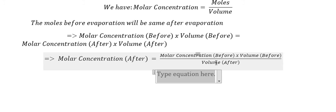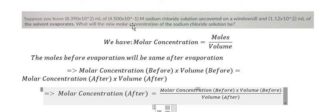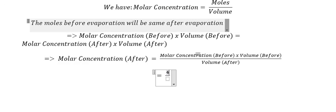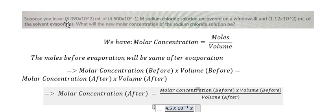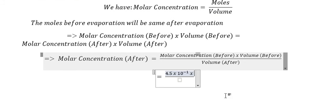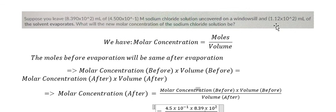We put in the values. Molar concentration before is 4.5 × 10⁻¹, multiplied with the volume 8.39 × 10². Divide by the volume after, which is the original volume minus the amount that evaporated, 1.12 × 10².